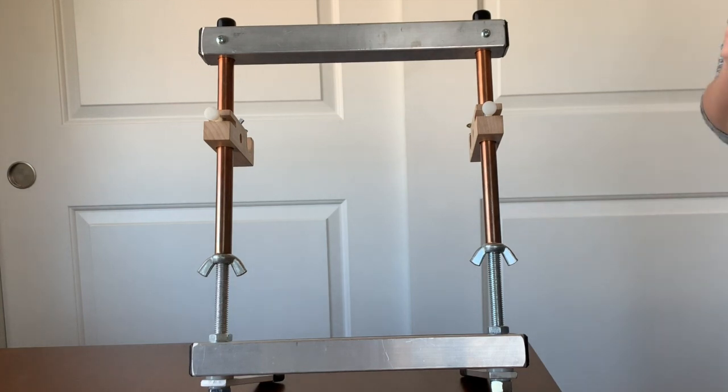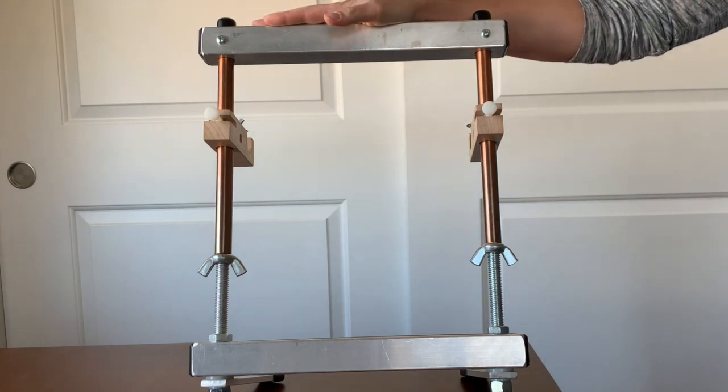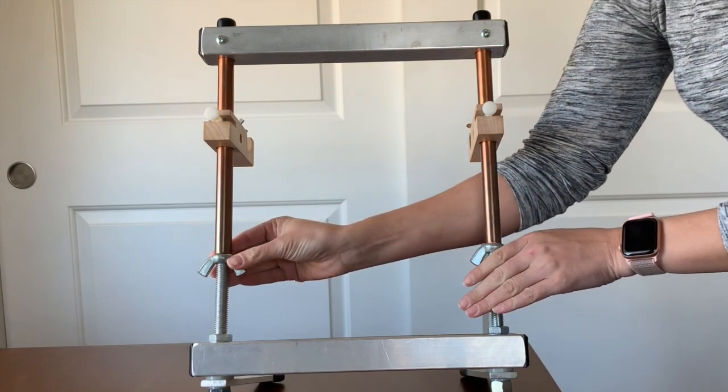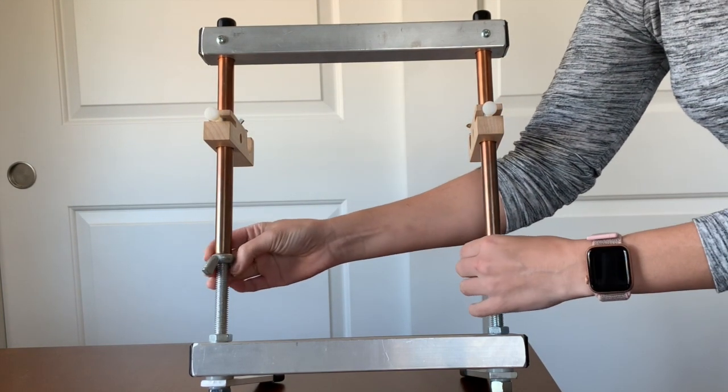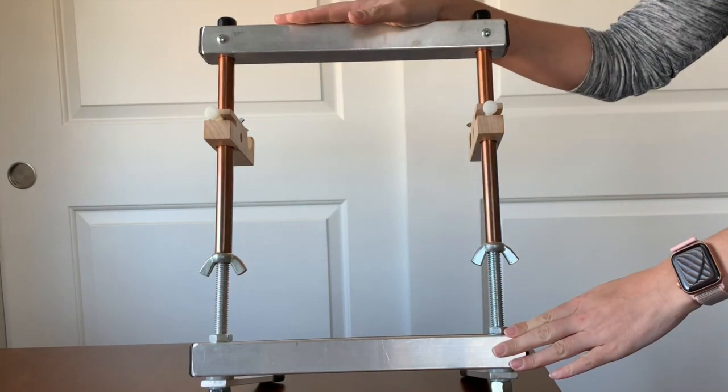This is how to install the Shasta combs for the No Warp Ends method of warping. The first thing you're going to do is adjust the height of your loom by turning the wing nuts in a counterclockwise motion until the loom stands at the height you want.